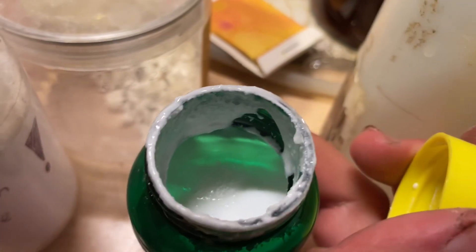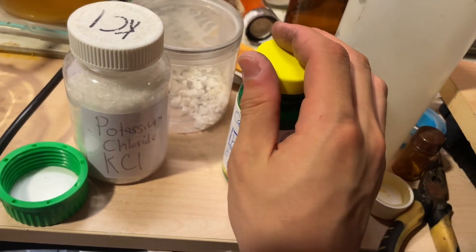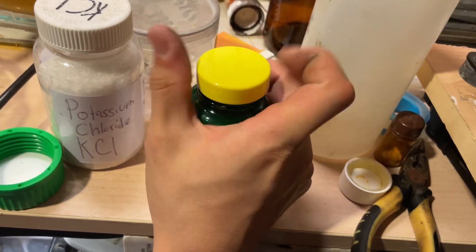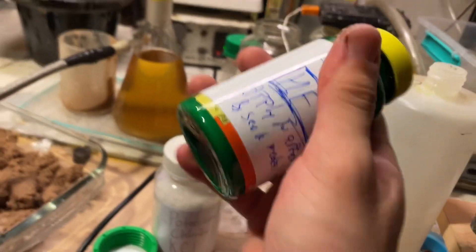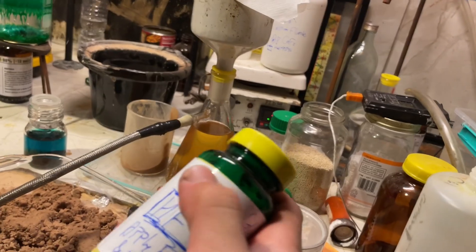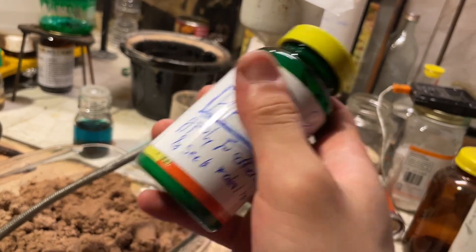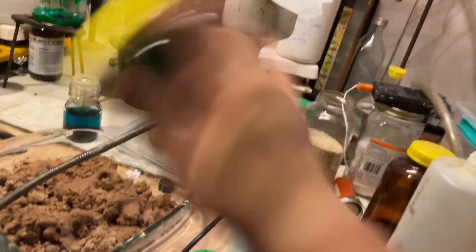I also threw in a little sodium benzoate, didn't bother measuring it because it doesn't really matter, as a preservative to stop it from growing bacteria or mold. Mold can grow in copper acetate, so mold will grow on anything it can. Might as well just prevent that.